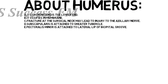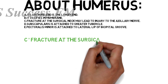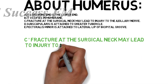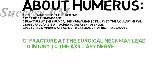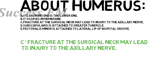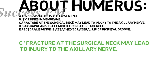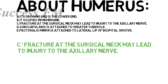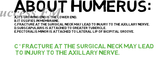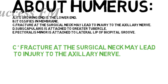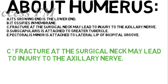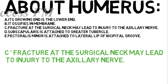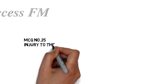The correct answer is option C — fracture at the surgical neck may lead to injury to the axillary nerve. The rest of the options are false because the growing end of the humerus is proximal. It also ossifies in cartilage. Subscapularis is attached to the lesser tubercle, while teres minor is attached to the medial side of the proximal humerus.